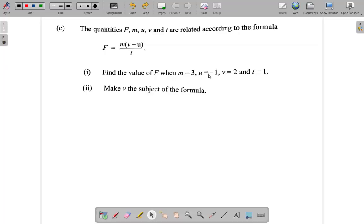Now, let's look at part C of this question. The quantities F, M, U, V, and T are related according to the formula: F equals M times V minus U, all over T.